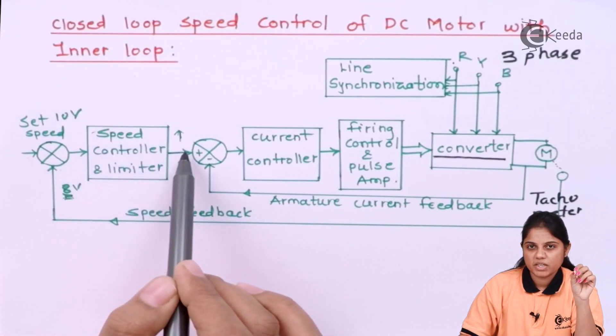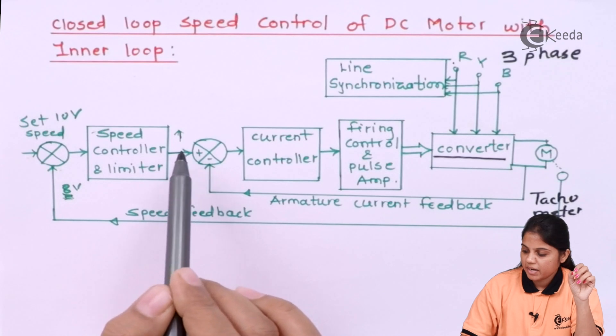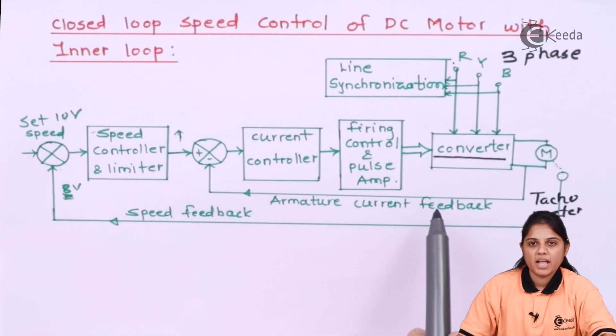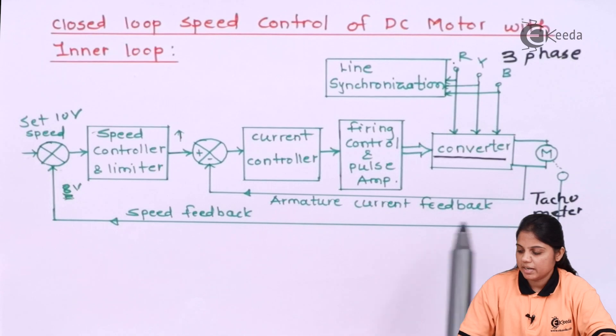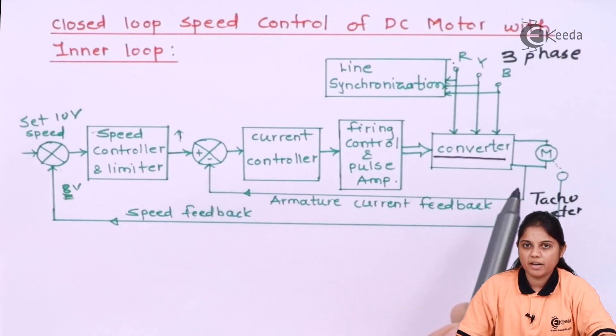Now it will compare the current with this armature current feedback and it will measure because armature current will not change. It will remain same.